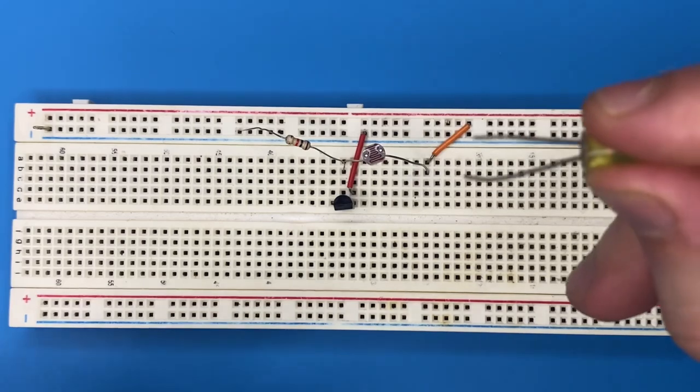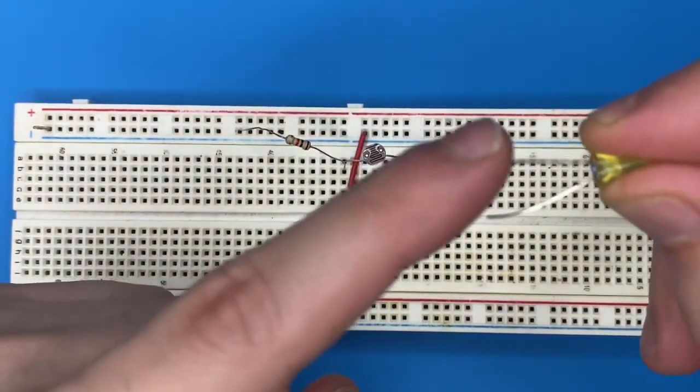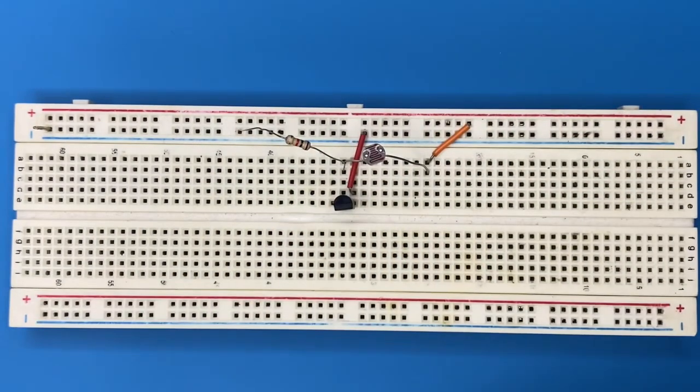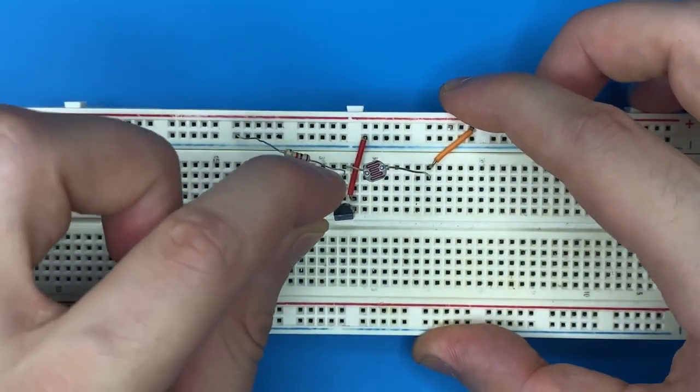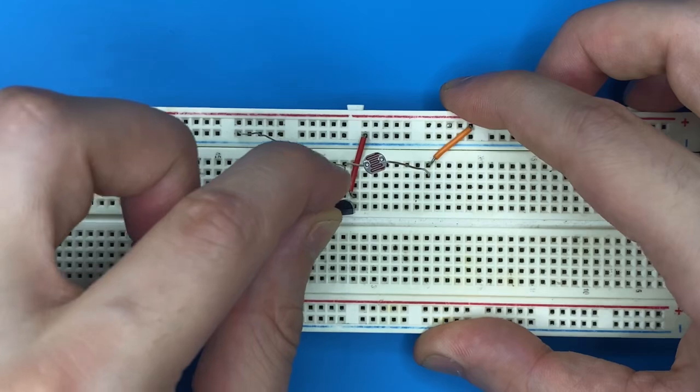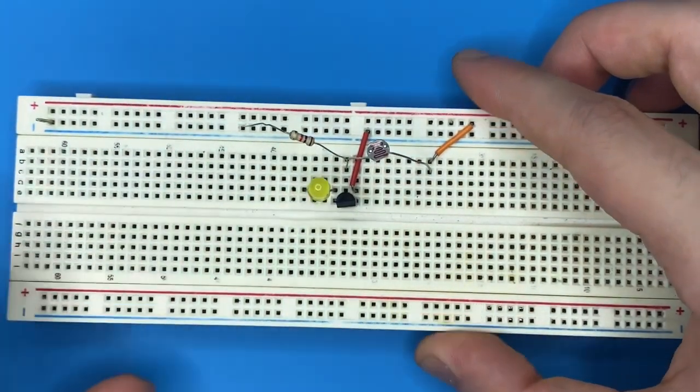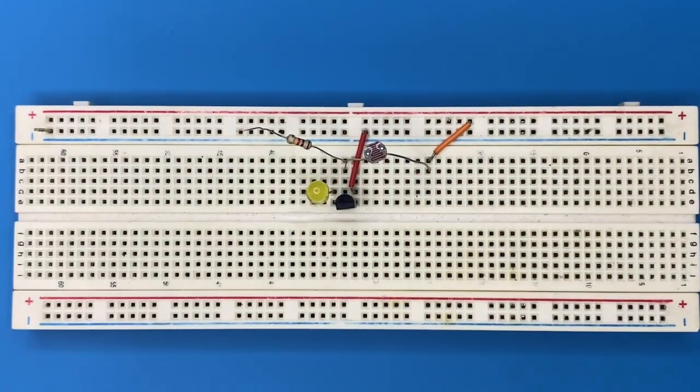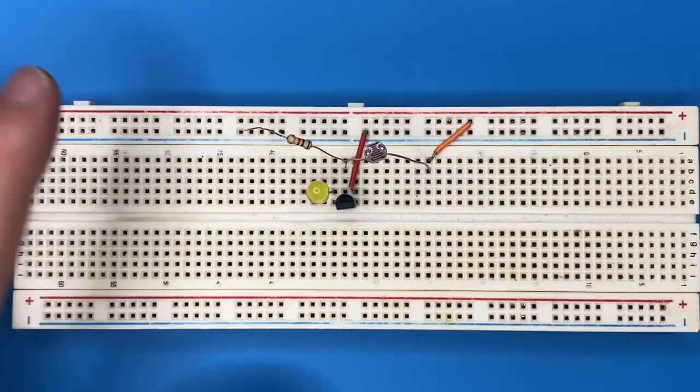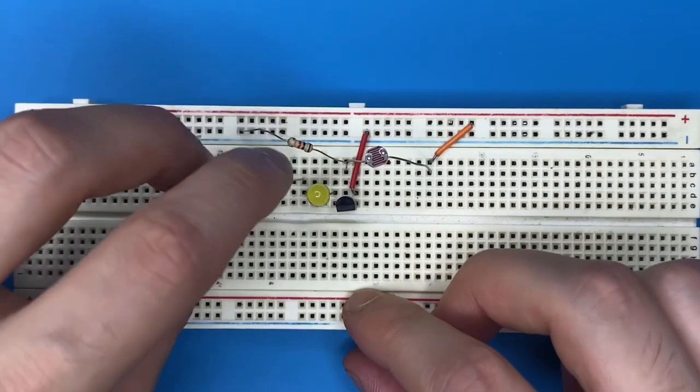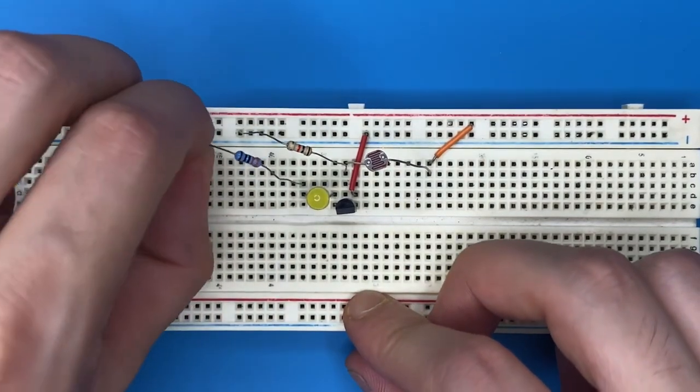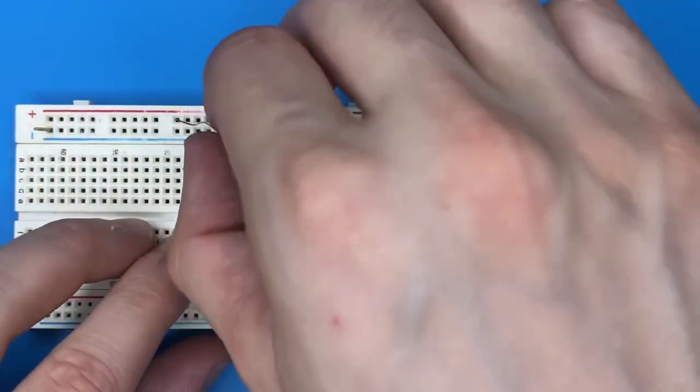For the yellow LED, connect the cathode, the shorter pin, to the collector of the transistor. Connect the anode to the positive rail via the 330 ohm resistor, which will limit the current across the LED.